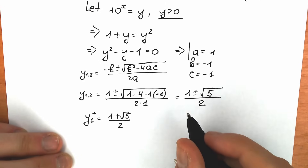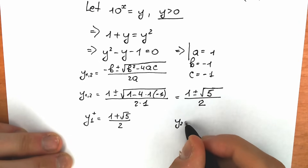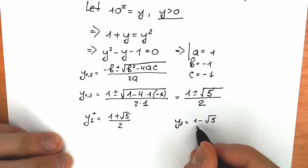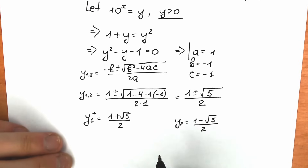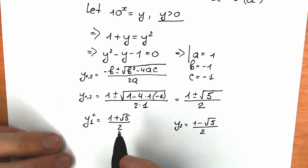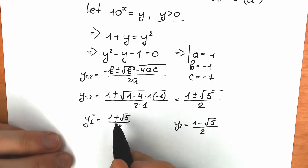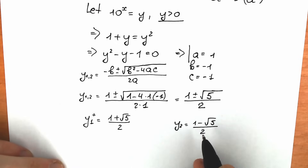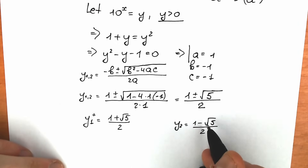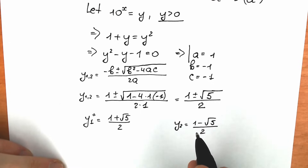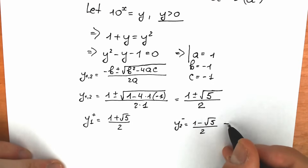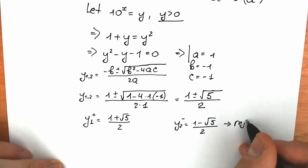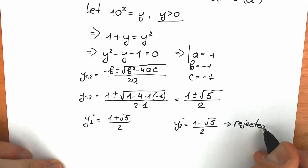Y₁ = (1 + √5) / 2 is positive — positive numerator, positive denominator — so this is valid. Y₂ = (1 − √5) / 2 is negative, because 1 minus something greater than 2, divided by positive, gives a negative result. So y₂ is rejected.